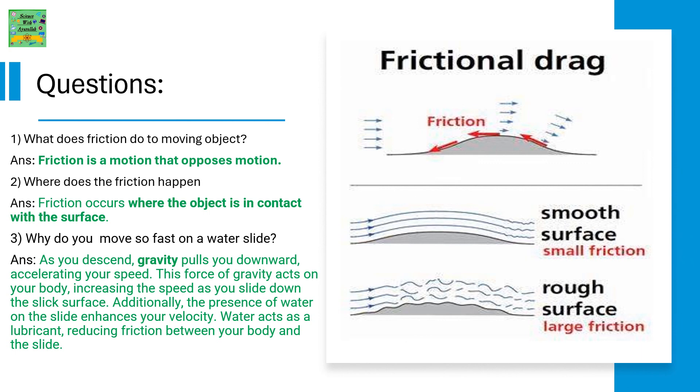What does friction do to moving objects? Friction is a motion that opposes motion.